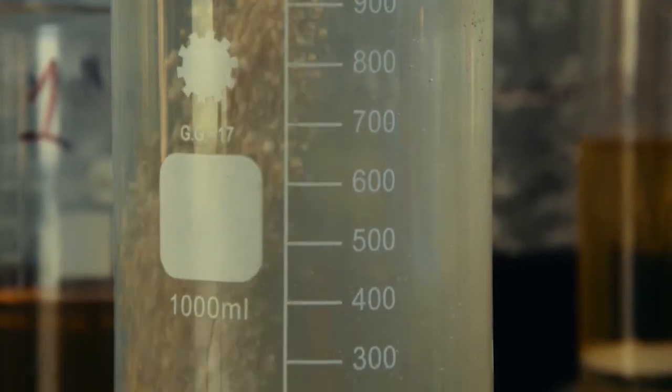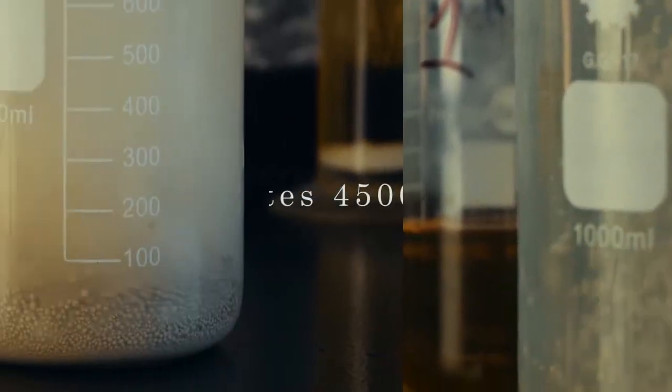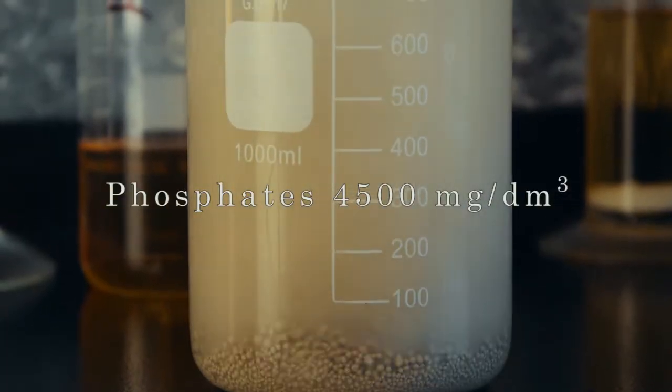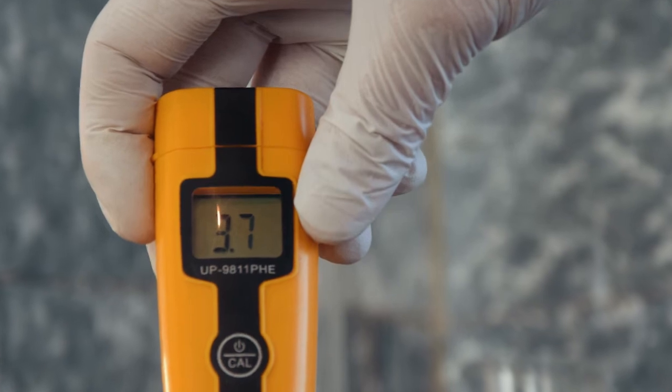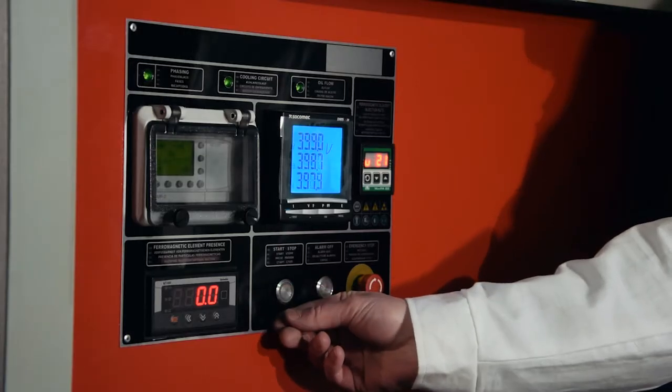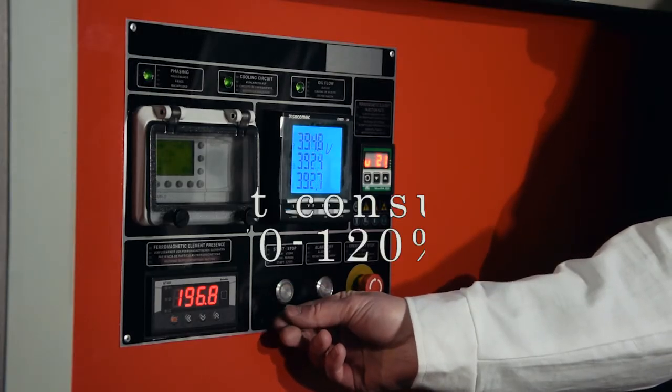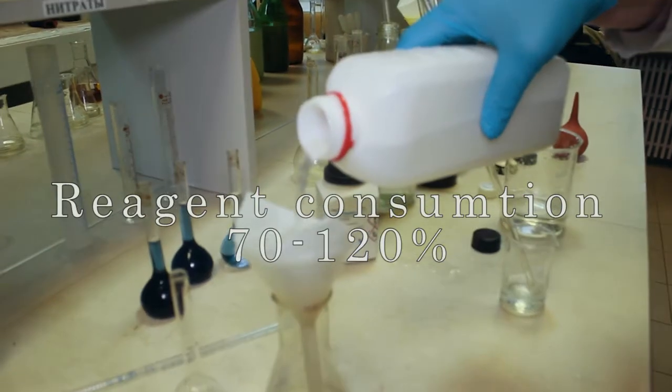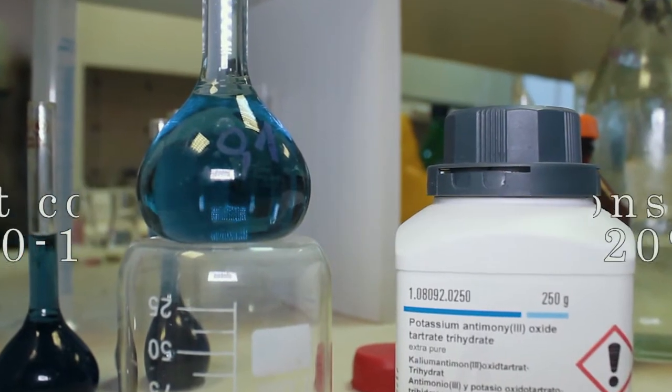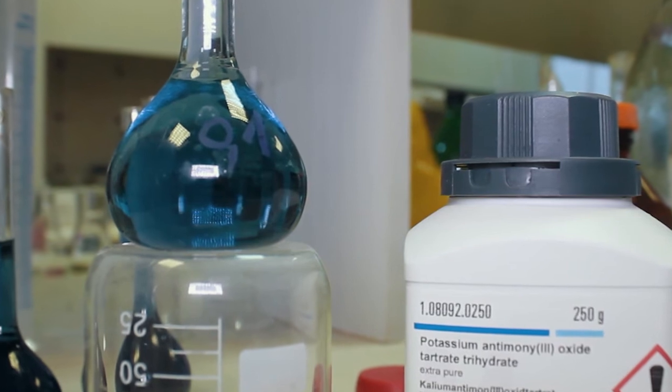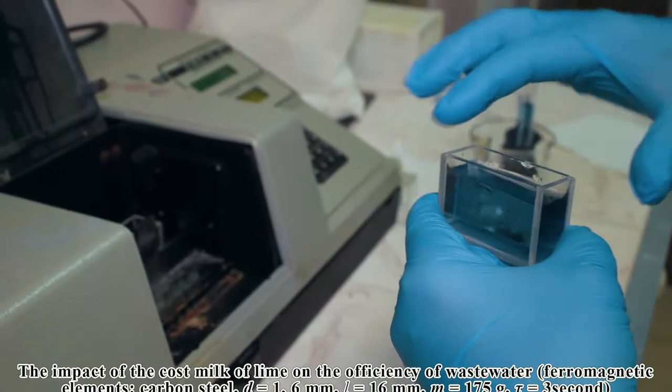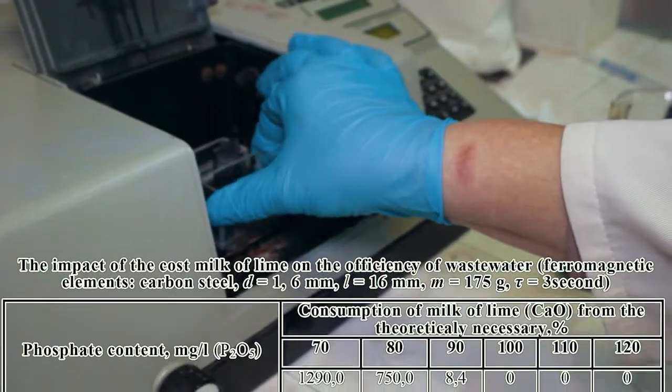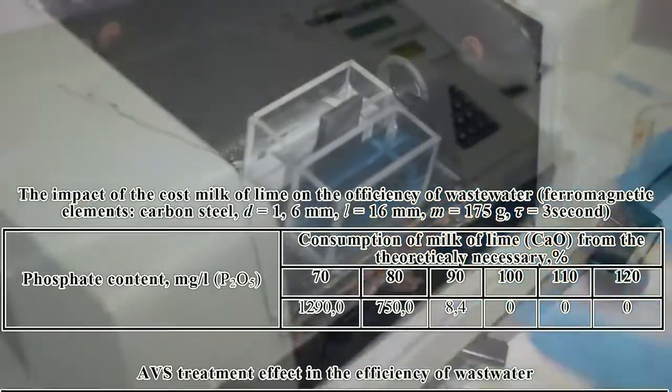The substance used for the research was industrial wastewater with 4500 mg per liter phosphate concentration, pH of 4.0, 10% lime milk processed for 1 to 3 seconds in the mill, reagent consumption of 70 to 120% of stoichiometric, pH of the wastewater during processing in the range of 4.0 to 12.0. The content of phosphate in wastewater was determined by photocolorimetric method. Test results are presented in tables below.